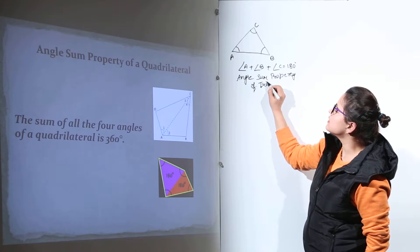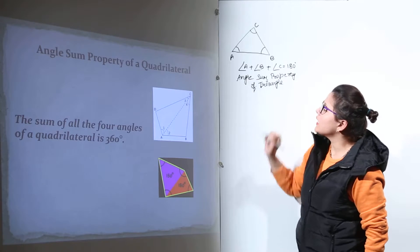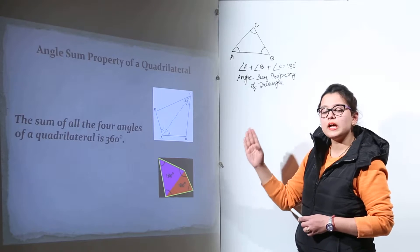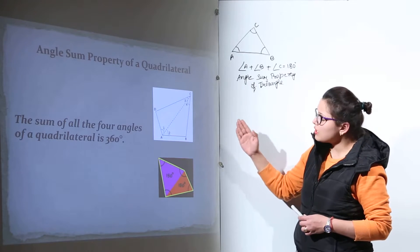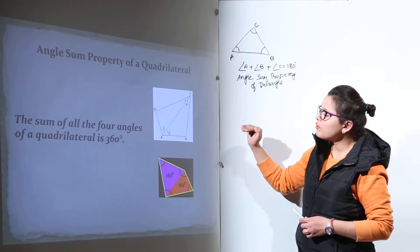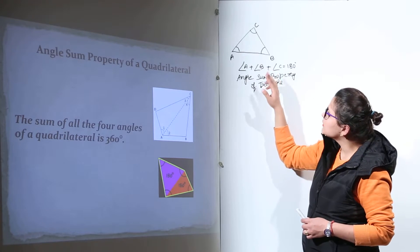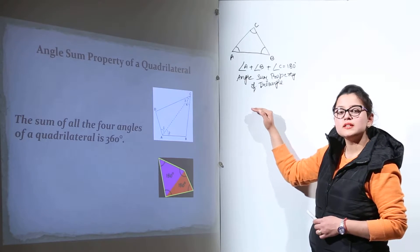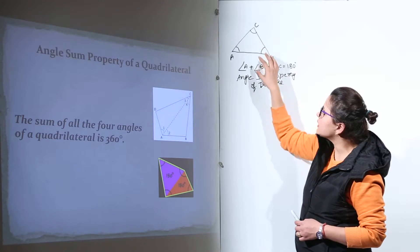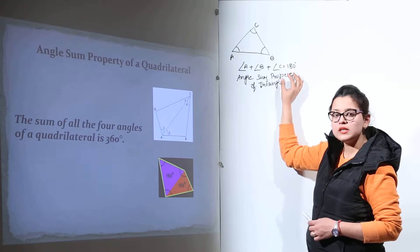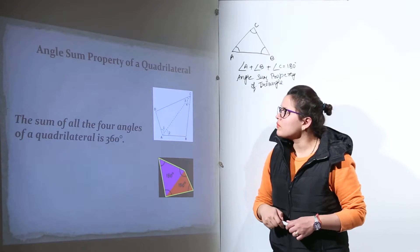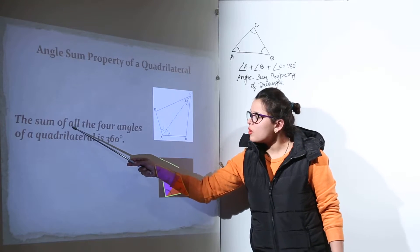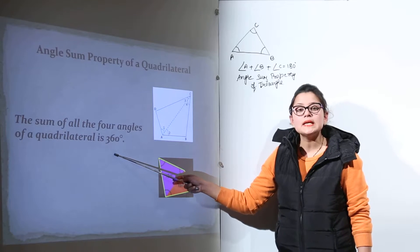Now we will be discussing the angle sum property of a quadrilateral. A quadrilateral has four sides and four angles, whereas a triangle has three sides and three angles. The sum of all three angles of a triangle is 180 degrees. Now, what will be the sum of all the angles of a quadrilateral? The property says that the sum of all four angles of a quadrilateral will be 360 degrees.